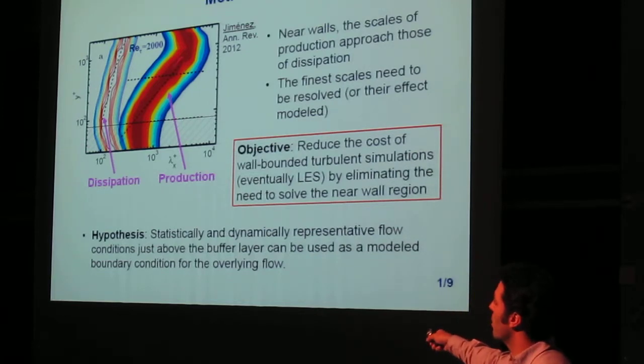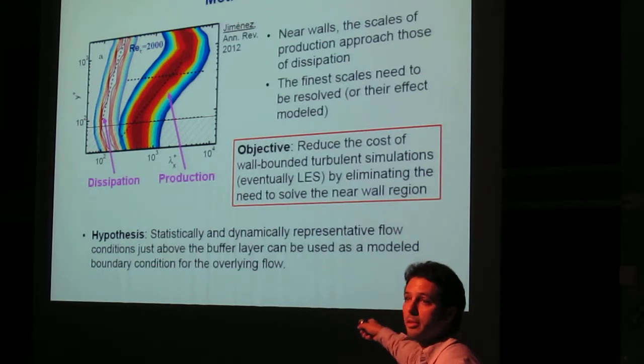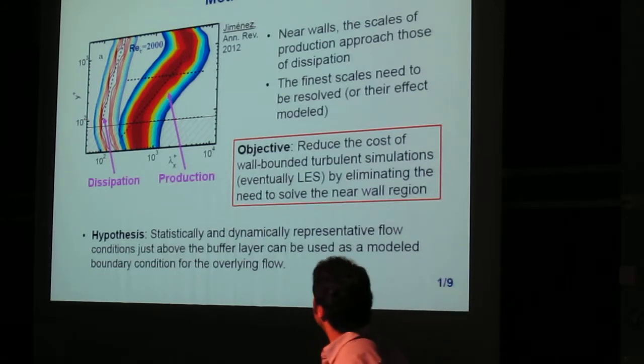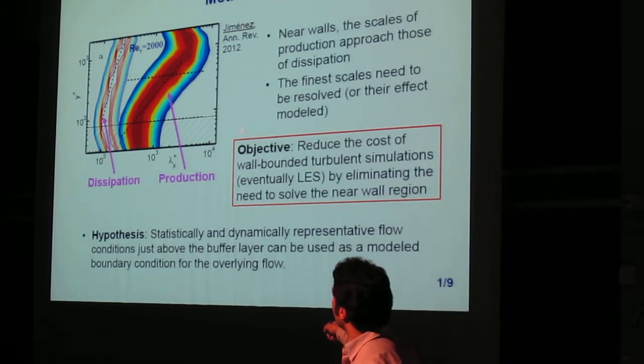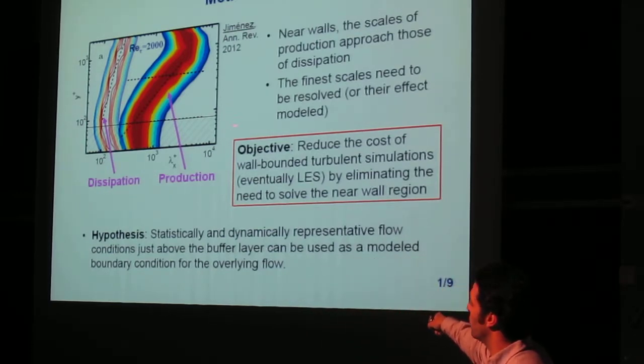Whereas as you go away from the wall, the large scale has an inertial range in between where you could put your elements. So the idea is to try to get rid of this lower region in the flow and instead of imposing a boundary condition at the wall, impose some synthetic boundary condition farther away from the wall.